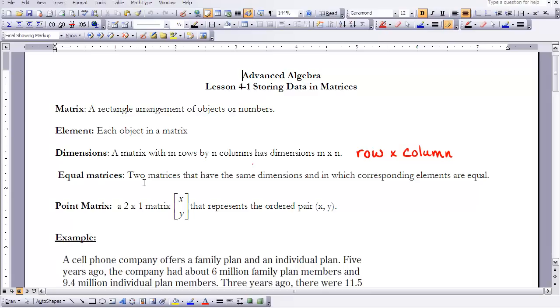And then the other piece that we'll discuss later on in this lesson is point matrix. So basically what they're doing is, in a matrix, they're representing an ordered pair. So x comma y is your ordered pair, and so it's x over y in a matrix, in a two by one matrix. So now let's move on to the first example.